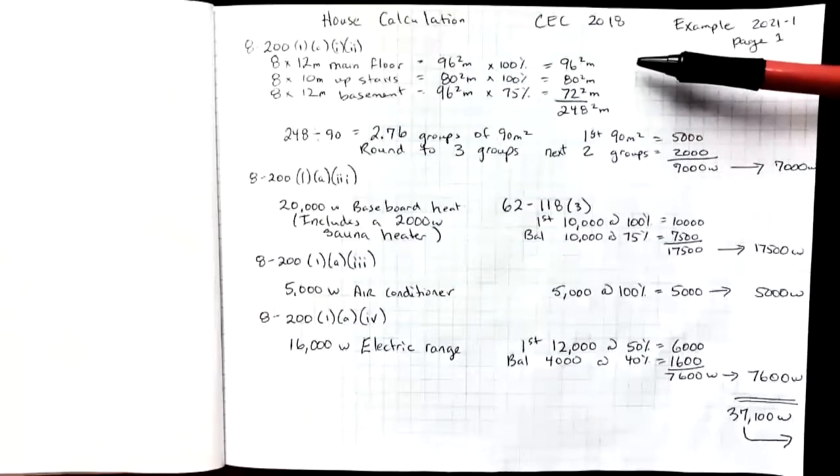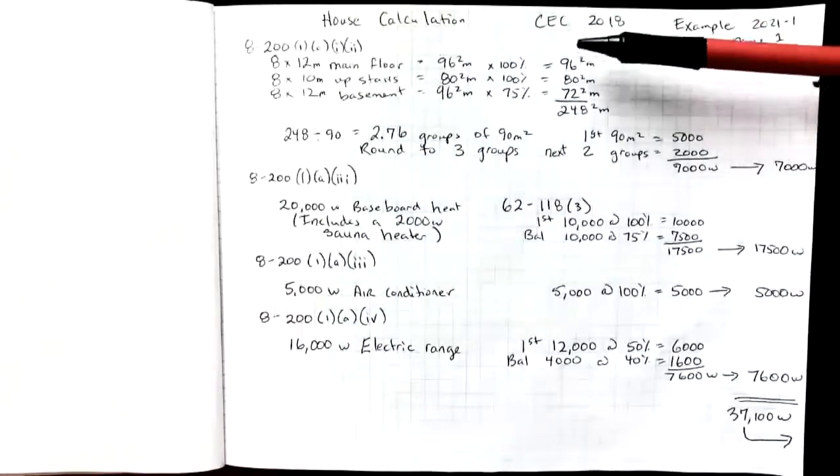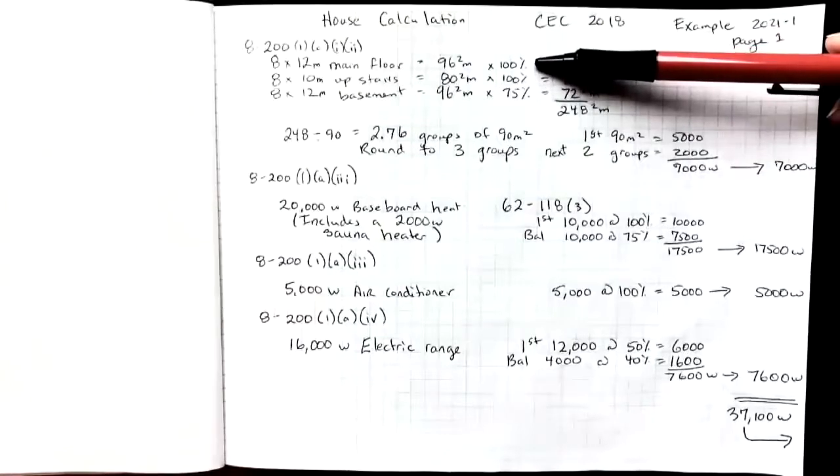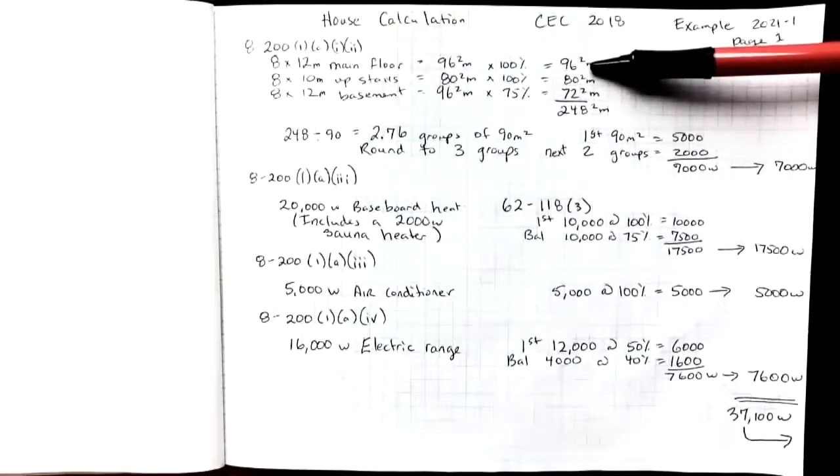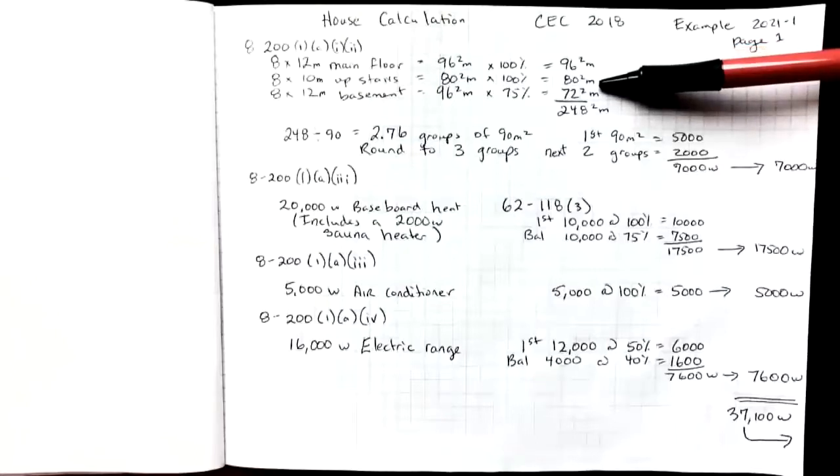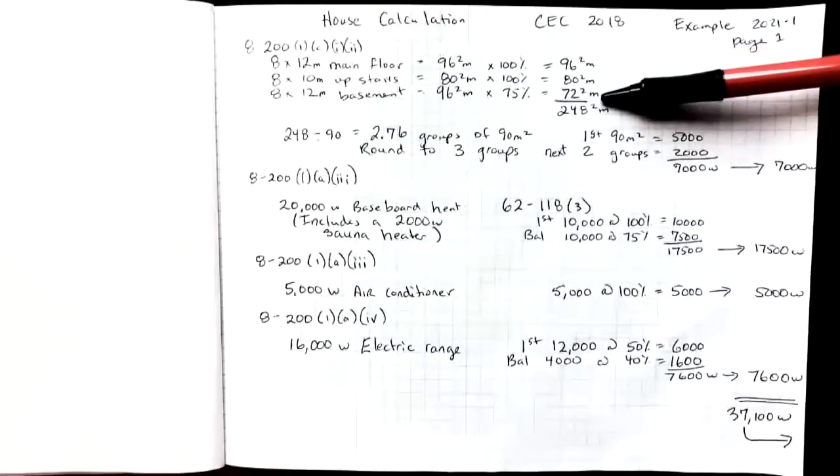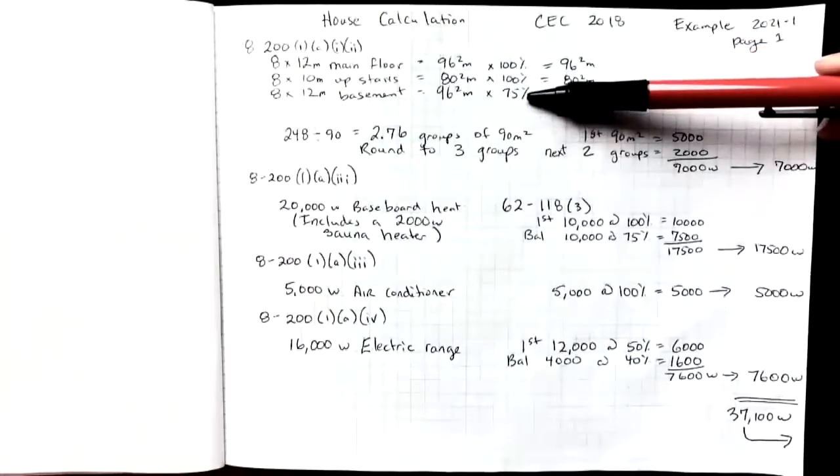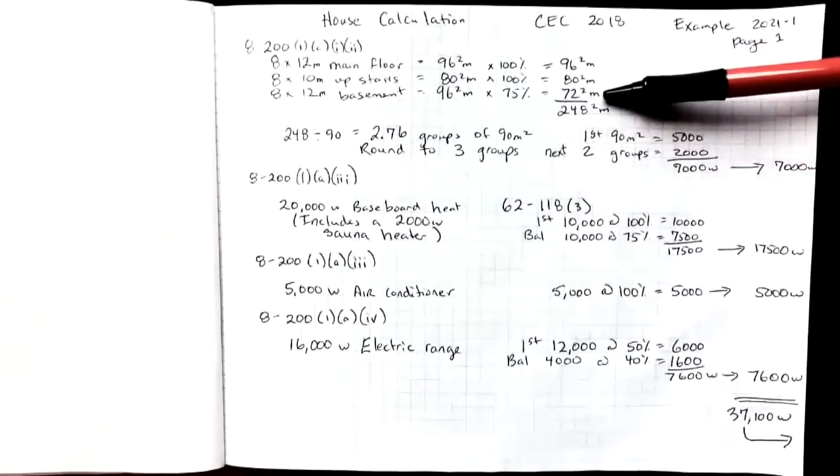In this case the home was 8 by 12. It had a main floor and upstairs and a basement and these were different sizes so you have to be careful that way. What we do is find the area of main floor just multiply 8 by 12 meters gives us 96 square meters. We use 100% of that towards the total living area of the home. The upstairs was 8 by 10. We use 100% of that 80 meters squared and then the basement was 8 by 12 which gave us 96 square meters but we only use 75% of the basement towards the total living area.